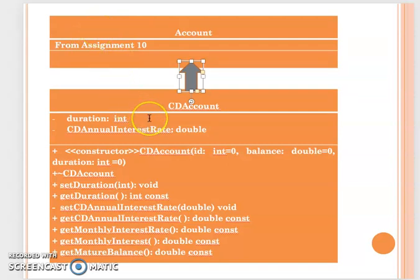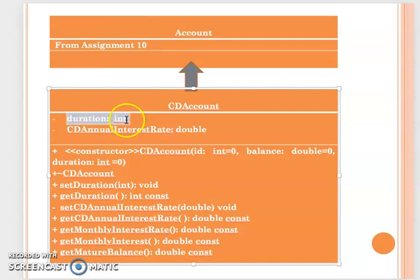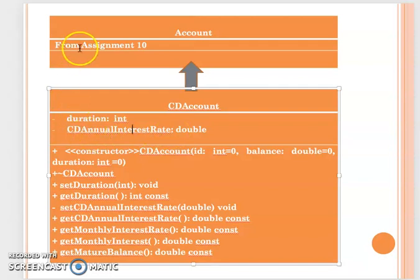In addition to the ID and balance inherited from the base class, the CD account has two private data attributes. The first is duration, an integer representing how many months the CD account will be held without deposit or withdrawal. The second is the CD annual interest rate, which is based on the annual interest rate from the account class.